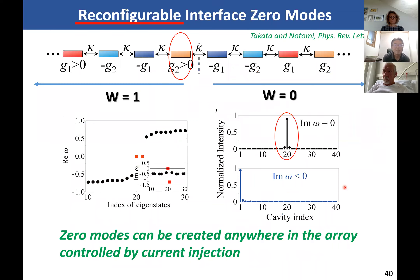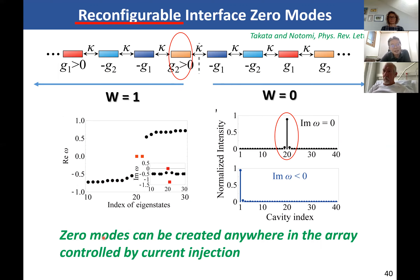This is very interesting because our structure itself is homogeneous — just a simple array of cavities. We can modulate the imaginary part of the refractive index by current injection. This means we can realize the edge mode anywhere in this one-dimensional chain. Numerical simulation shows that by controlling current injection, we can realize the edge mode at any position. This is another example of reconfigurable photonic topological systems.